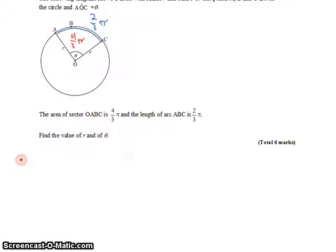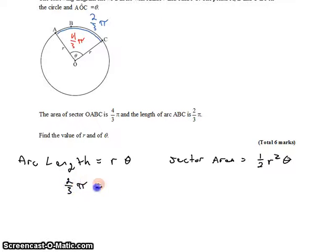One for the arc length, and that's equal to R theta. And we'll set up our second equation, the sector area. The sector area is also known, that's 4 thirds of pi, and that's equal to 1 half R squared theta.